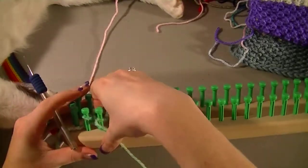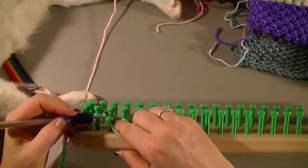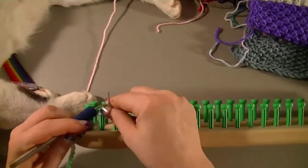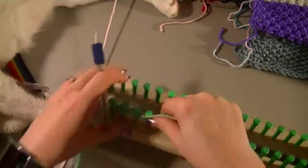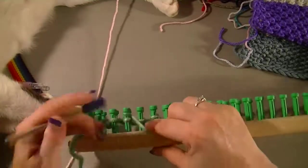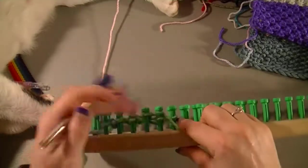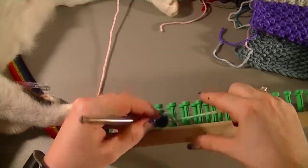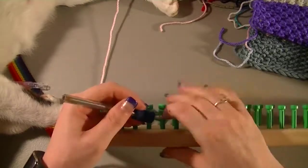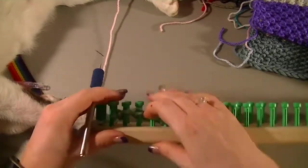Okay, so we will do purl one, e-wrap one, purl one, e-wrap one, and purl one. This would be our row one. Go through and take the e-wraps off.